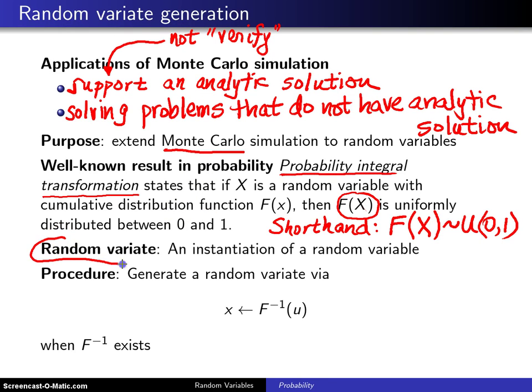First of all, what is a random variate and how is it different from a random variable? You remember that a random variable was a mapping from the outcome of a random experiment to a real number. A random variate is an instantiation of a random variable, usually done on a computer, but you can do them by hand as well, it's just they're faster on a computer.